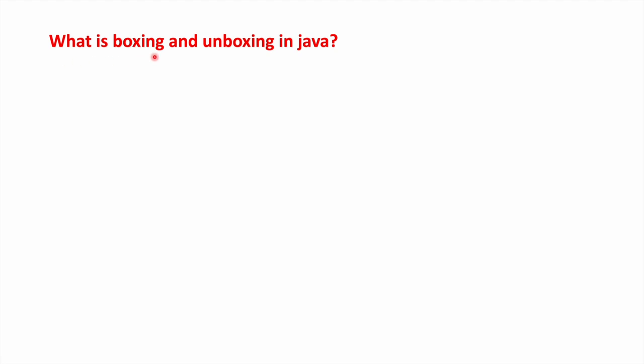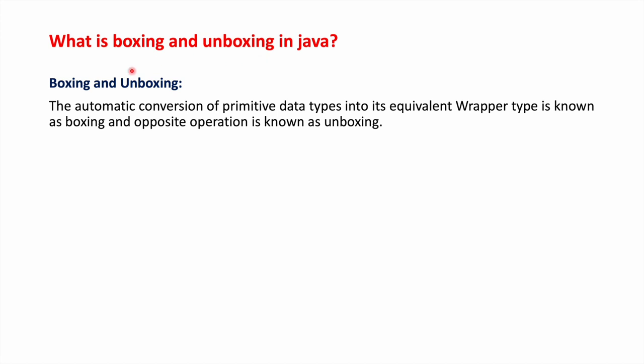What is boxing and unboxing in Java? The automatic conversion of primitive data types into its equivalent wrapper type is known as boxing, and the opposite operation is known as unboxing.